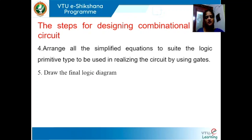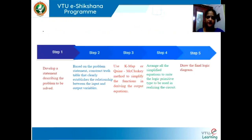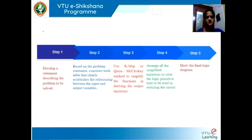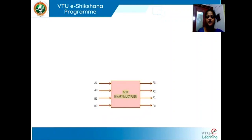The final step is to draw the logic diagram. These are the five steps that we need to follow to design any combinational logic circuit, presented here in the form of a process diagram. It is sequential — we have to understand how step 1 leads to step 2. Steps 1 and 2 are must for step 3, and similarly for the other steps as well. If we are comfortable with this, we shall be able to design any combinational logic system.